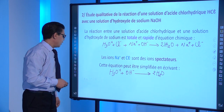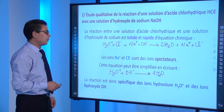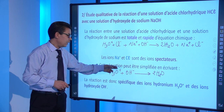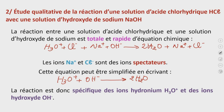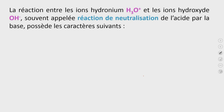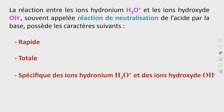Cette réaction est spécifique des ions H₃O⁺ et des ions OH⁻. Elle est souvent appelée réaction de neutralisation de l'acide par la base ou de la base par l'acide. Elle possède donc les caractères suivants : elle est rapide, totale et spécifique des ions hydronium H₃O⁺ et des ions hydroxyde OH⁻.